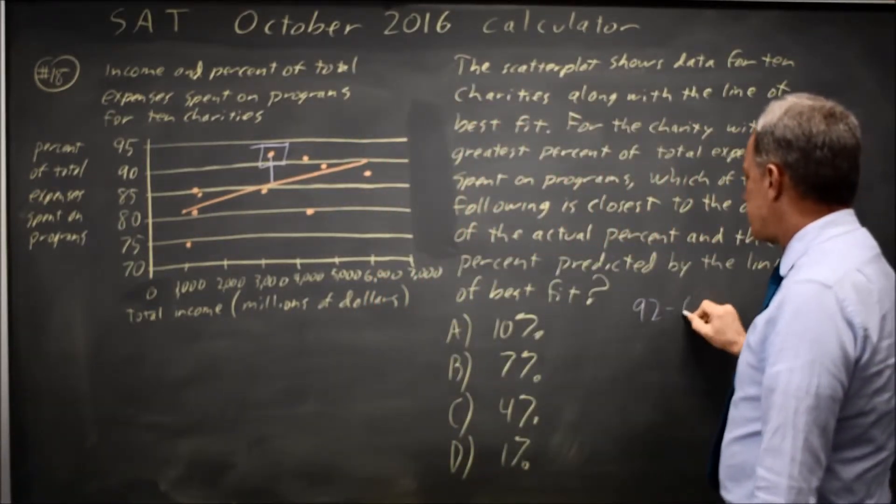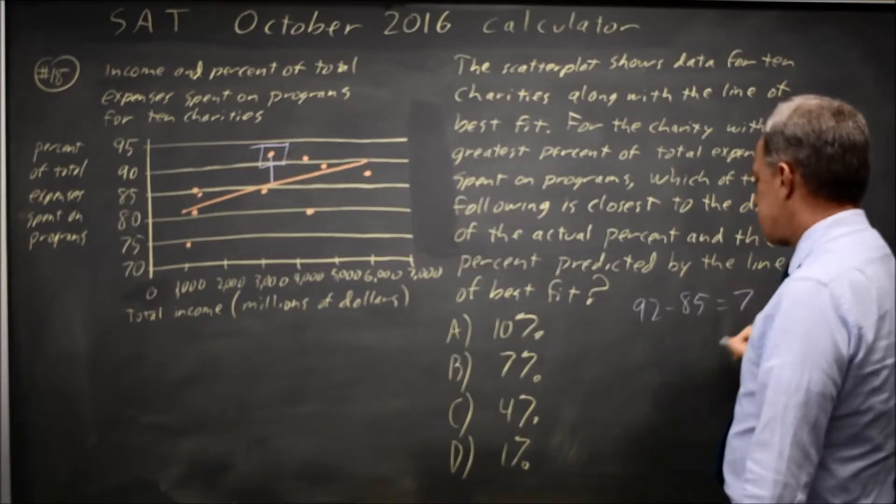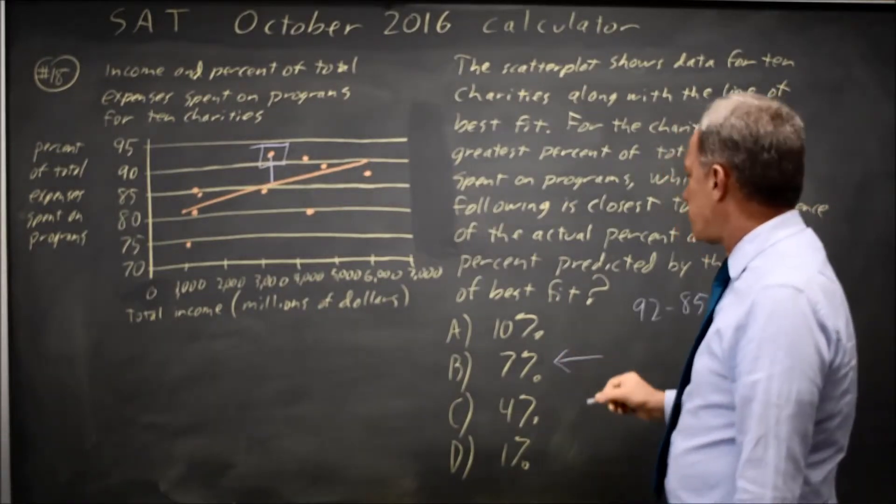So 92 minus 85 equals 7%. That would be choice B.